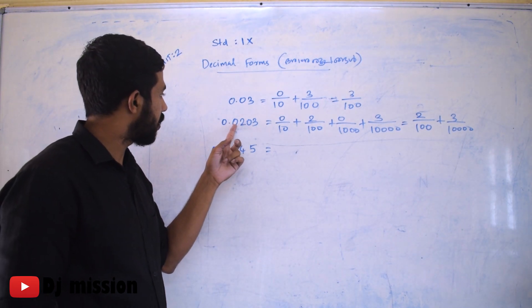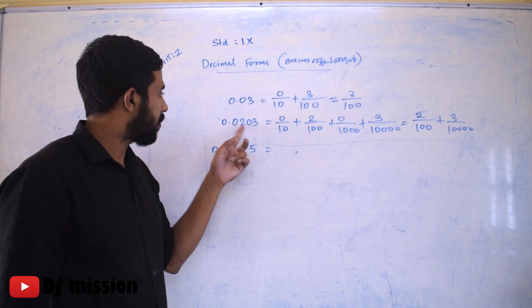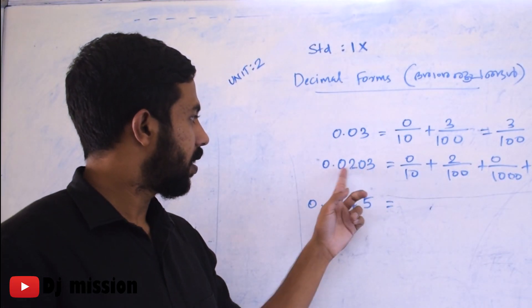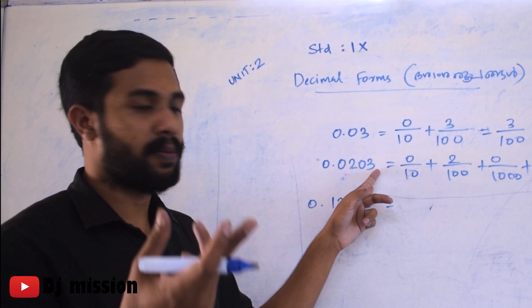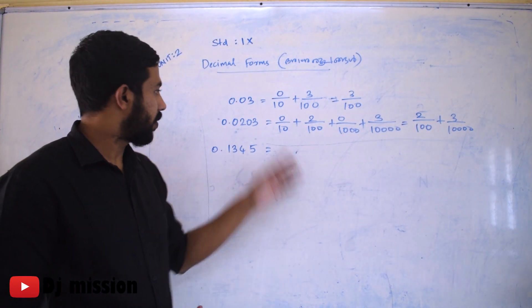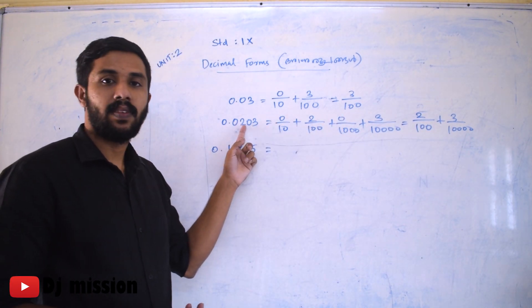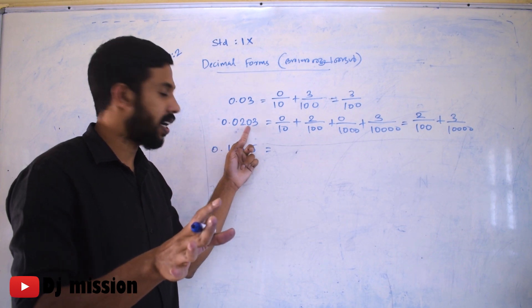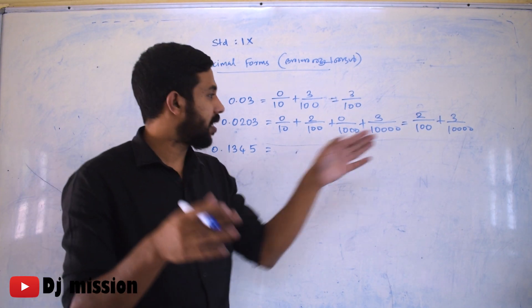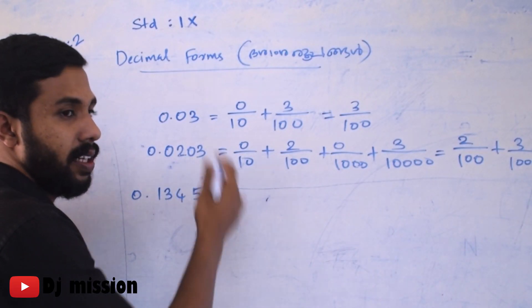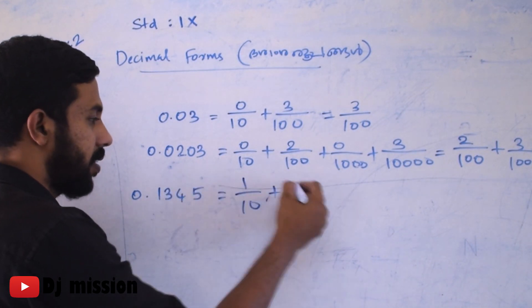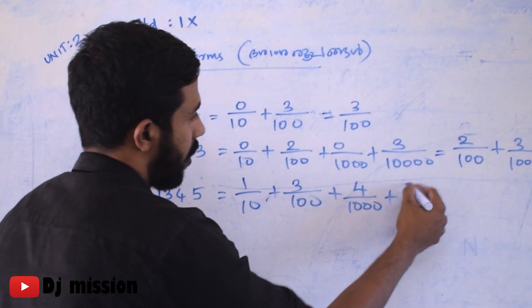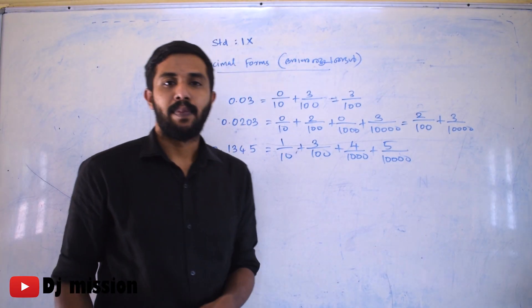If we have 2 in the hundredths position, we have 2 by 100. Then 3 by 10,000. For 0.1345: 1 by 10 plus 3 by 100 plus 4 by 1000 plus 5 by 10,000 equals 0.1345.